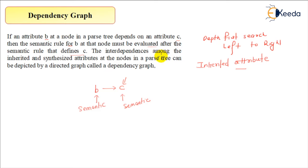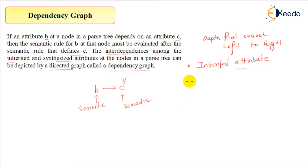The interdependency among the inherited and synthesized attributes at a node in a parse tree can be depicted by a directed graph called the dependency graph. This is not only taking care of inherited attributes — we can also draw the dependency graph for synthesized attributes.